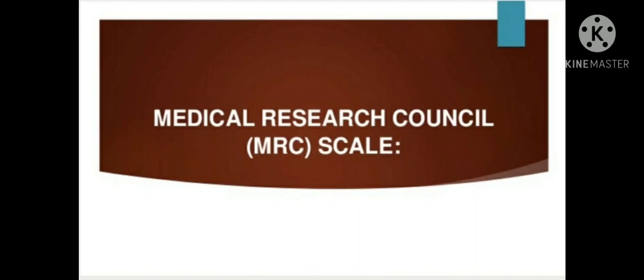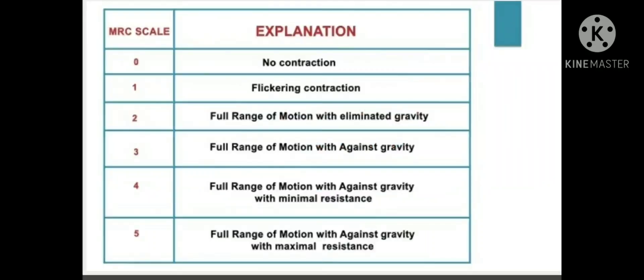In the MRC scale: Grade 0 means no contraction. Grade 1 means there is flickering of contraction. Grade 2 means full range of motion in a gravity-eliminated position. Grade 3 means full range of motion against gravity. Grade 4 means full range of motion against gravity with minimal resistance. Grade 5 means full range of motion against gravity with maximal resistance.